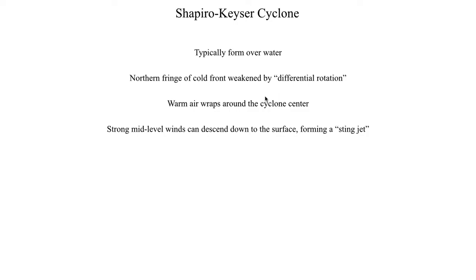The reason why it's called a sting jet is because when you look at some weather data, the feature actually looks like the stinger of a hornet or a wasp. This gets its nomenclature from the same idea as a hook echo — there really is no hook part of the storm, but when we look at it on radar there's a feature that looks like a hook, so we call that a hook echo. Similarly, when you look at a particular data plot, the feature actually looks like the stinger or the abdomen of a hornet or a wasp. That's where the term sting jet comes into play.